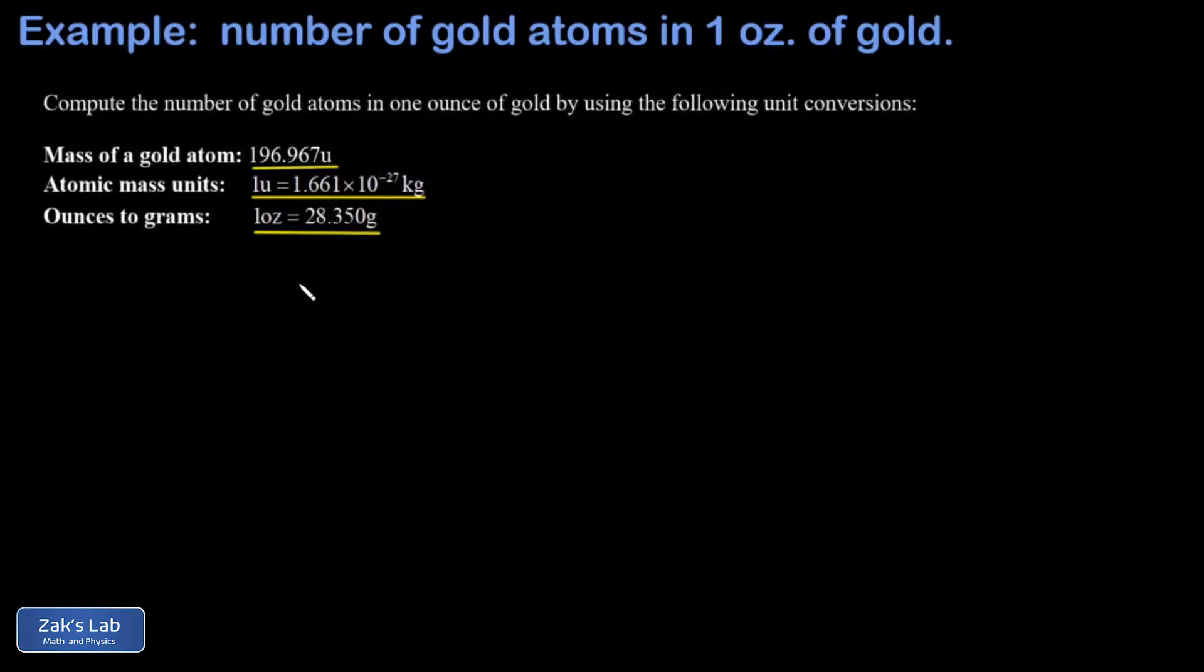So to figure out how many gold atoms are in one ounce, I'm going to start with how much gold I have, which is one ounce, and start multiplying by conversion factors until all I'm left with is the number of gold atoms.